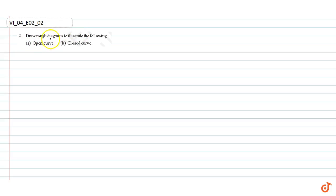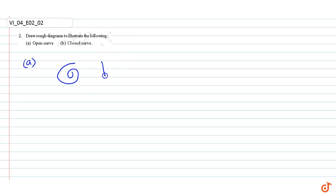In this question we have to draw rough diagrams to illustrate the following. Part A: open curve. This curve is open because the shape is not closed by curves or line segments. This is also an open curve because the shape is not closed by curves or line segments.